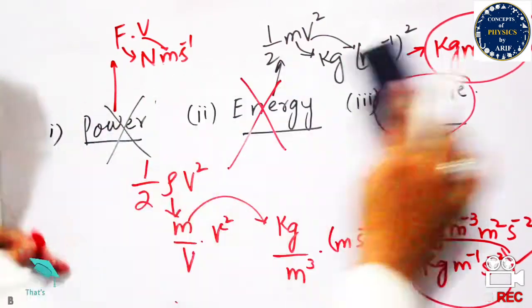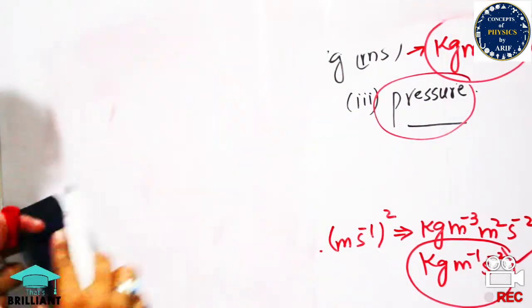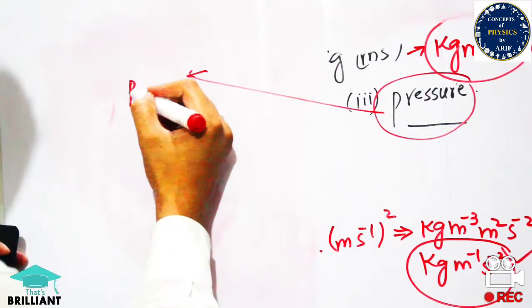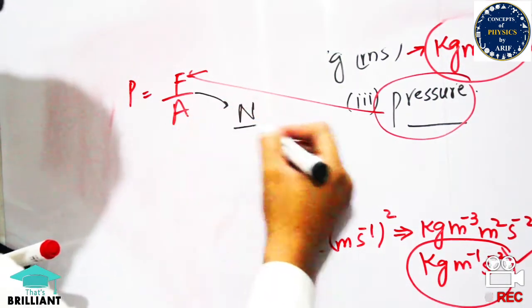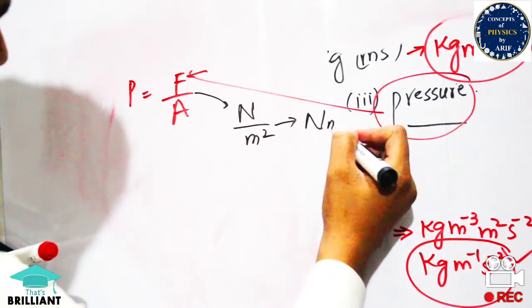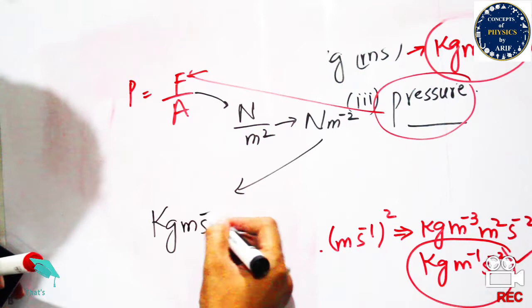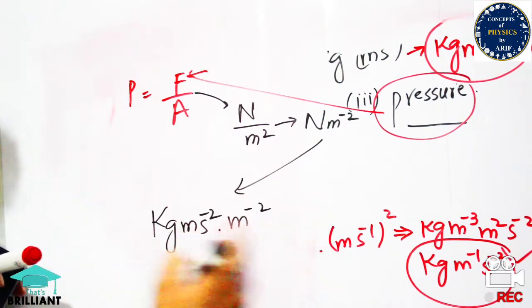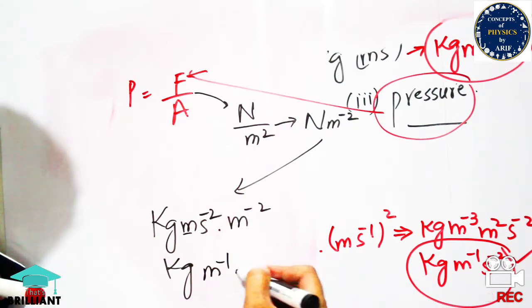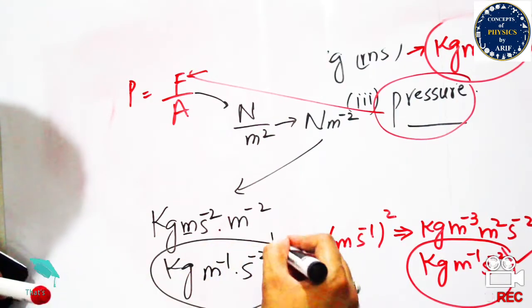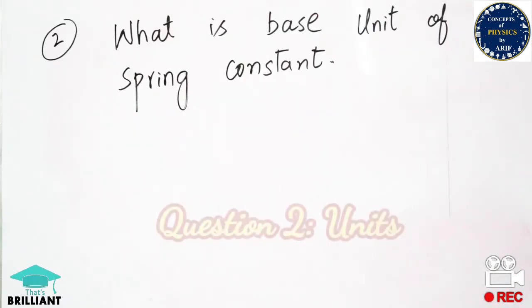The only remaining quantity is pressure. Pressure equals force per unit area. The unit of force is Newton and area has units of meter squared. Newton per meter squared: opening Newton gives kg·m·s⁻², divided by m², which gives kg·m⁻¹·s⁻². This is equal to our expression, so the answer is pressure. You can take this answer in the exam.